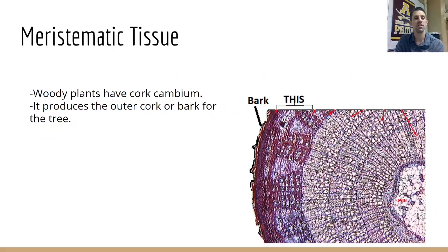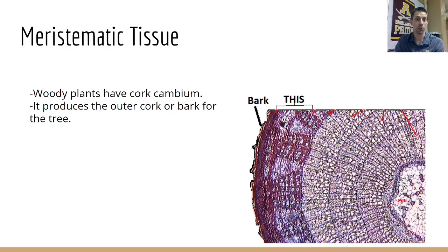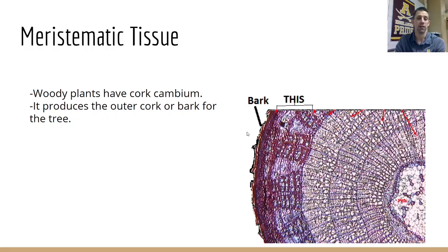The other type of meristematic tissue is called cork cambium, which is only found in woody plants. Its job is to produce the bark or cork found on the outside of the plant, making the woody plant wider by adding to its width. And those are all of our types of plant cells and plant tissues.